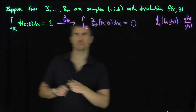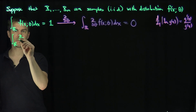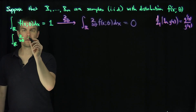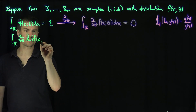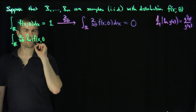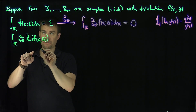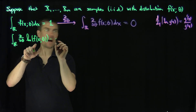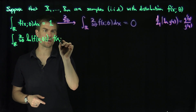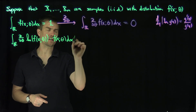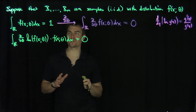This is equivalent to saying that the integral over R of the derivative with respect to theta of the log of f of x and theta — which equals f prime over f — times f of x and theta dx is also equal to 0. So that's the relationship we get.